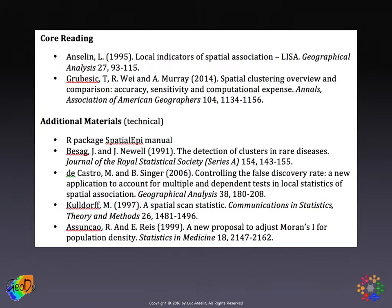The more technical background materials are the manual for the R package spatial epi, which we'll use in the lab to compute the scan statistics. And then a couple of classics: the Besag and Newell article on the Besag-Newell method to detect clusters, Martin Kulldorff's original article on the spatial scan statistic, the paper by Assuncao and Reis on the standardization of Moran's I for variance instability, and a discussion of the multiple and dependent test aspect of local statistics in the De Castro and Singer paper.